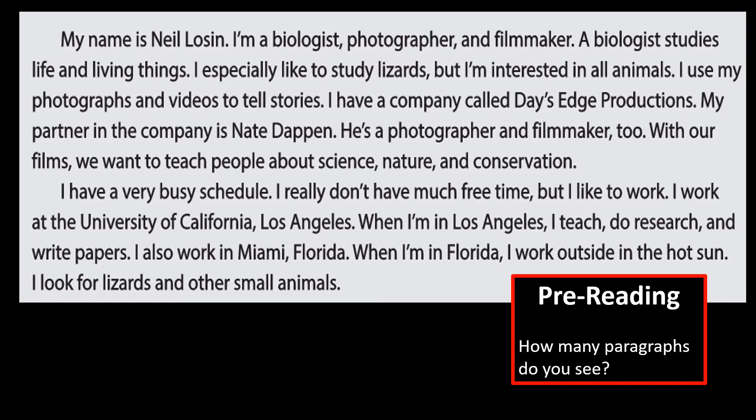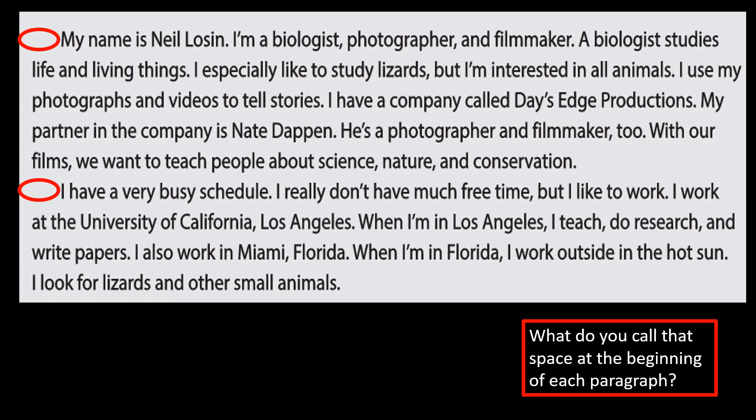So first, just look at the text. How many paragraphs do you see? A paragraph is kind of like a chunk of text. There are two paragraphs. We know there are two paragraphs because of the space that comes in front of each one. What do you call that space? It is an indent.